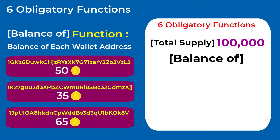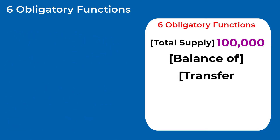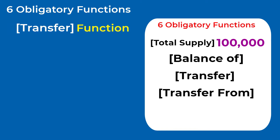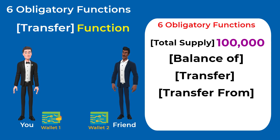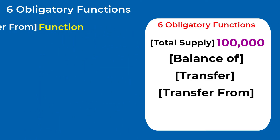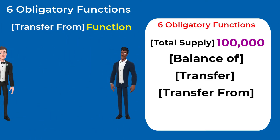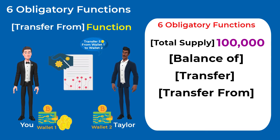You also need to add two functions for people to be able to trade your token: the Transfer and the Transfer From functions. The Transfer function allows you to send any amount of tokens from your wallet to anyone — for example, to transfer tokens from your wallet to a friend's wallet. The Transfer From function is used by a third party to send tokens from your wallet to another wallet, after you give it your permission.